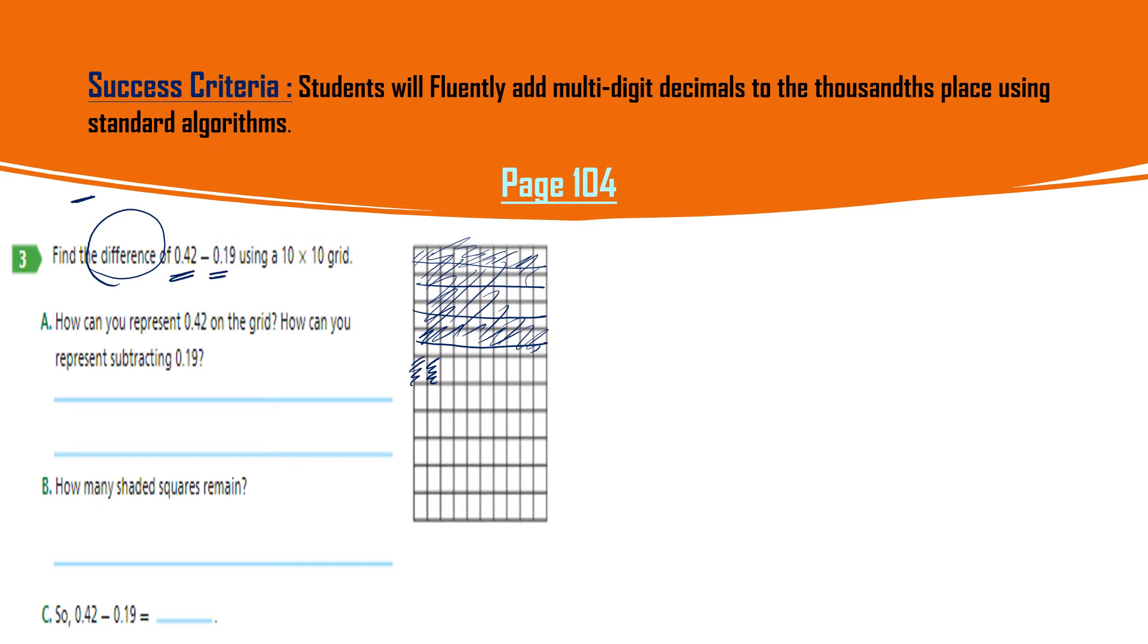Now minus 19, so you have to subtract 19. So you will cut all 10 here, and then from the second grid, 9. So you will color and subtract these 19 from the already colored 42 squares. So how many left? Look here, this is 10, this is 20, 21, 22, and then here 23. So 23 squares are left, right?